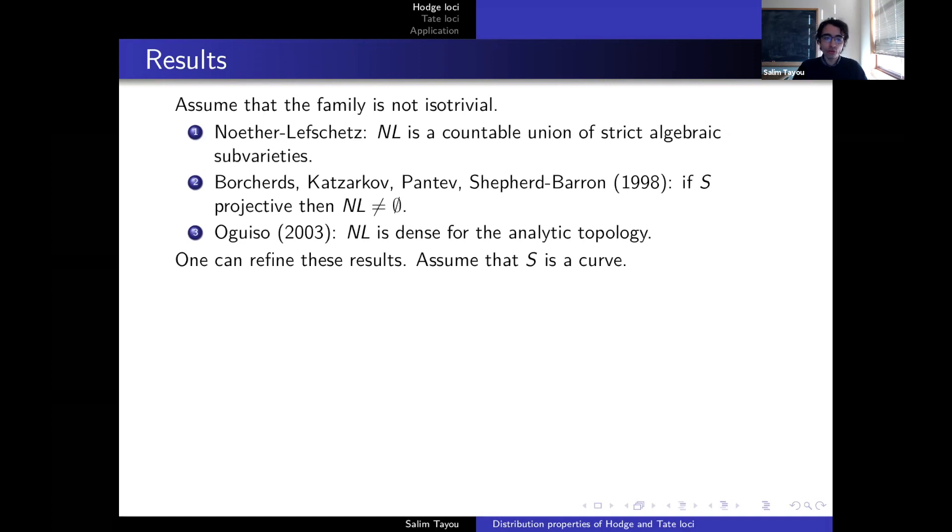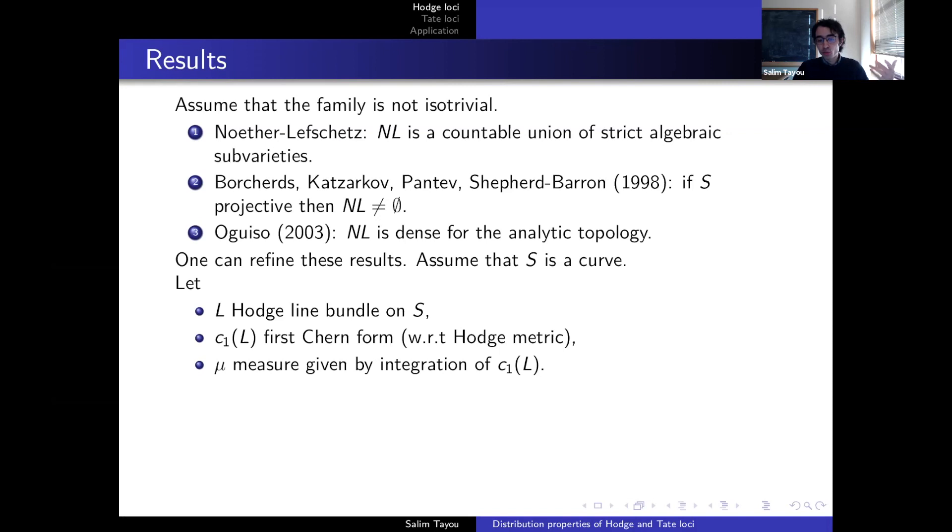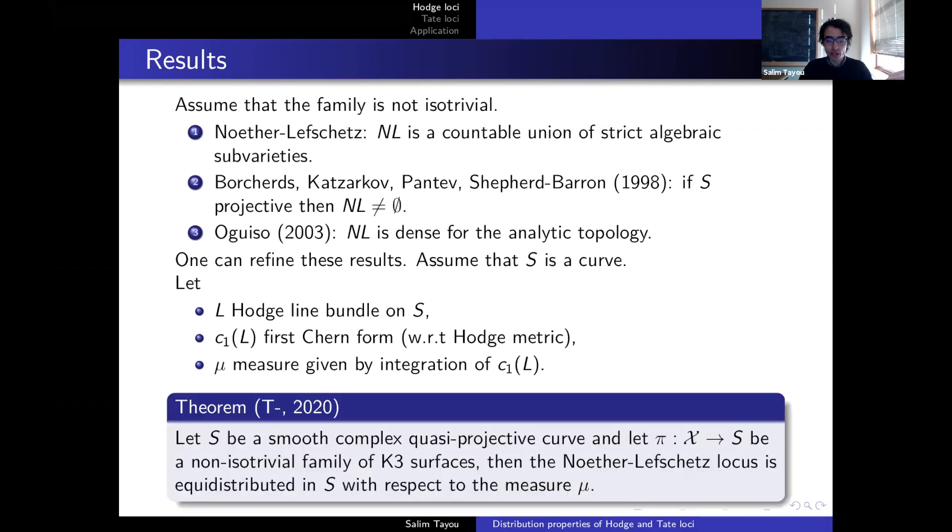One, in fact, can refine this result in the following way. For simplicity, let's assume that S is a curve, and let L be the Hodge line bundle on S, meaning the line bundle which to every little s in S associates the space of holomorphic differentials, the second differentials on the fiber. Consider a Chern form with respect to a Hodge metric and consider the measure given by integration of this Chern form on S. And then Maulik proved that this locus is equidistributed, the Noether-Lefschetz locus is equidistributed in S with respect to this measure mu. To give a precise meaning of the statement requires introducing the Poincare pairing in the H2. And the parameter that goes to infinity here is we're taking elements in the H2, we're looking at its value with respect to this quadratic form, and we're cutting all the points for which there appear a Hodge class with a given value with respect to this quadratic form. And this locus will equidistribute.